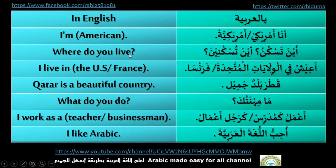'Where do you live?' — one form for male and another for female. For example: 'I live in the US, France, or Qatar.' Qatar baladun jamil means 'Qatar is a beautiful country.' Ma mihnatuk means 'what do you do or what is your profession.' For example: Ana amalu mudarrisan or rajul a'amal means 'I work as a teacher or a businessman.'